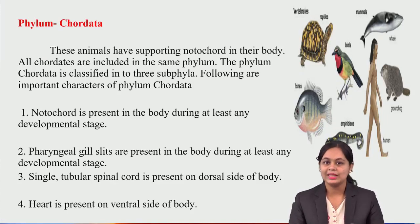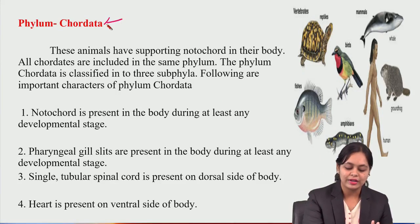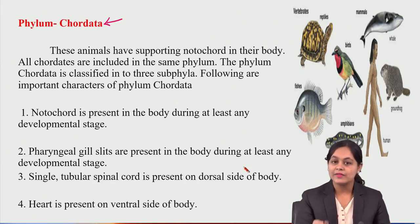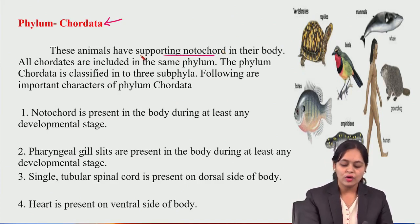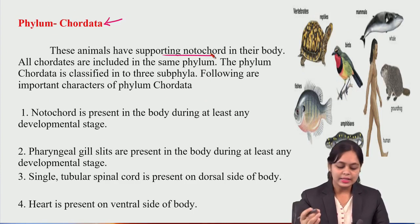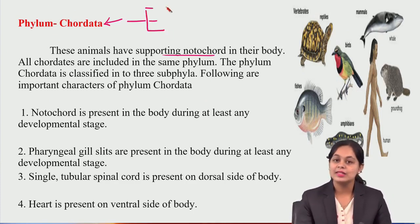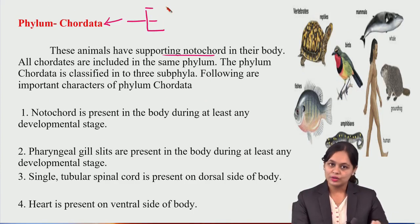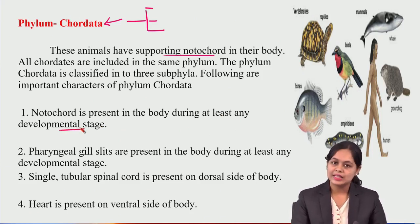Now coming to the next phylum, that is Chordata. These animals have the supporting notochord in their body. All chordates are included in this phylum. The phylum Chordata is classified into 3 subphyla. Notochord is present at least in any developmental stage — during the developmental stage, we will see the notochord in the body.